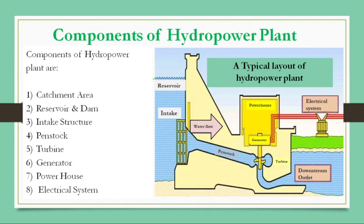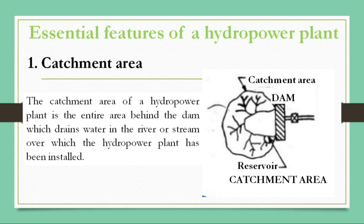The first component in detail is the catchment area. The catchment area of a hydropower plant is the entire area behind the dam which drains water into the river or stream over which the hydropower plant has been installed. In the diagram, the reservoir is shown and around it is the catchment area, with the dam shown along the side.